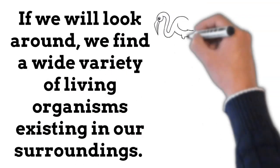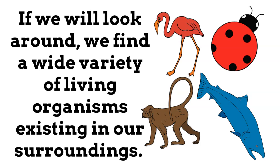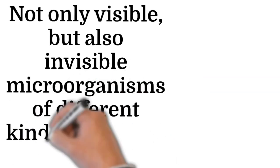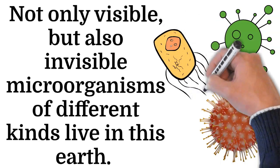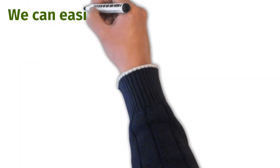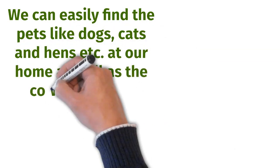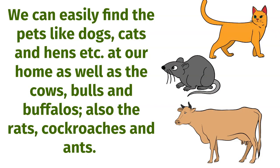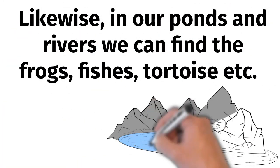If we look around, we find a wide variety of living organisms existing in our surroundings. Not only visible but also invisible microorganisms of different kinds live on this earth. We can easily find pets like dogs, cats and hens at our home, as well as cows, bulls and buffaloes, and also rats, cockroaches and ants. Likewise in our ponds and rivers we can find frogs, fishes, tortoise, etc.